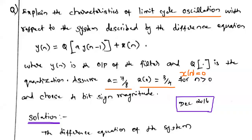Welcome to my channel. Today we are going to solve one important problem from the fourth unit, that is the finite word length effect. We have already solved problems on quantization of filter coefficients, input quantization error, and output quantization error in the previous four videos. Now we are going to solve a very important problem from this fourth unit: limit cycle oscillation.